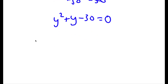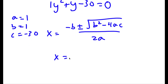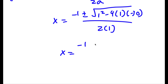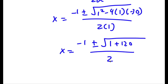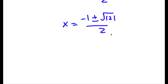Now, to solve this, I'm going to be using the quadratic formula, which is negative b plus or minus the square root of b squared minus 4ac, all over 2a. So in this case, a is equal to 1, b is equal to 1, and c is equal to negative 30. So I have negative 1 plus or minus the square root of 1 squared minus 4 times 1 times negative 30, all over 2 times 1. This simplifies to negative 1 plus or minus the square root of 1 plus 120, all over 2. Now, 1 plus 120 gives us the square root of 121 over 2, and the square root of 121 is 11. So I have negative 1 plus or minus 11 over 2.